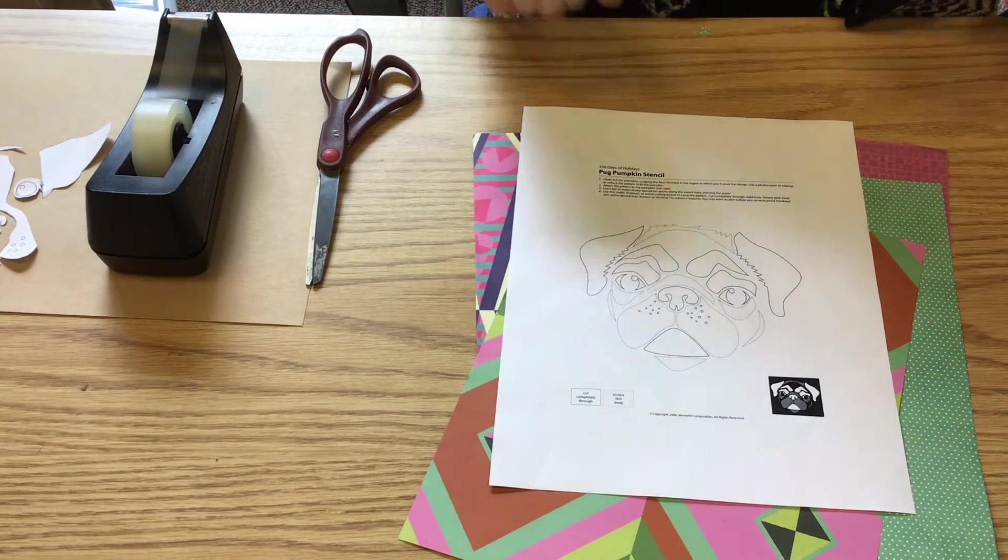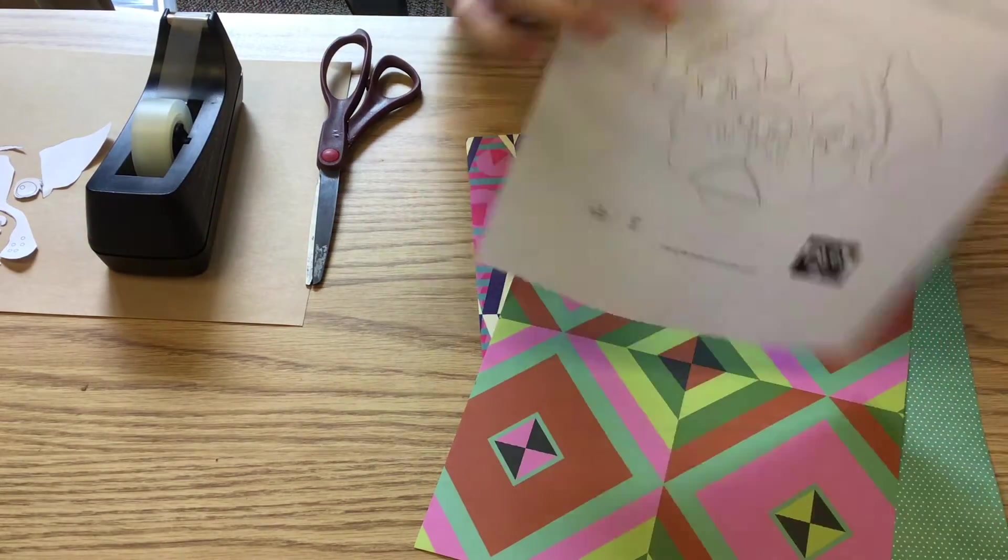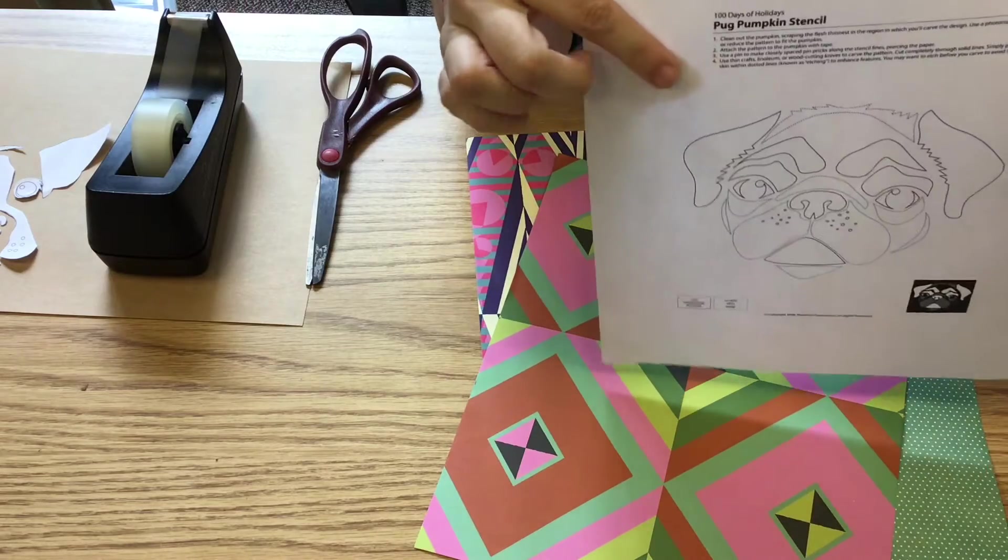So what we're going to do to get started is pick out our stencil. You're going to have a bunch of cats and a bunch of dogs to choose from, and what you're going to do is cut each one of these out.